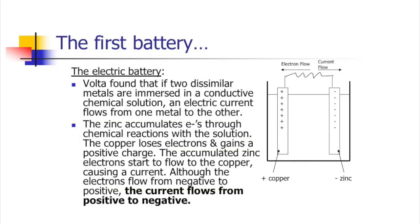After hundreds of years of convention working with electricity, we always talk about the current as flowing from positive to negative. So I want you to understand how it actually works, but when we picture current and how current flows, think of it as going from positive to negative.